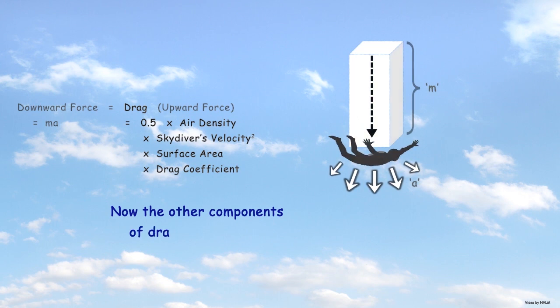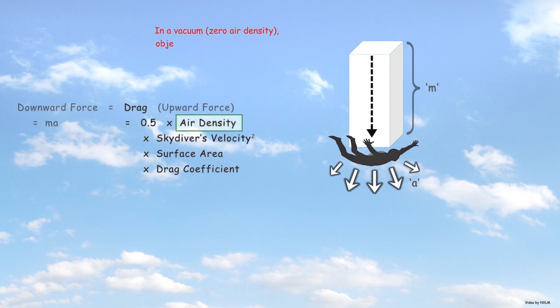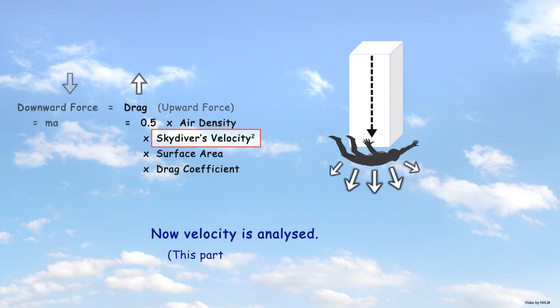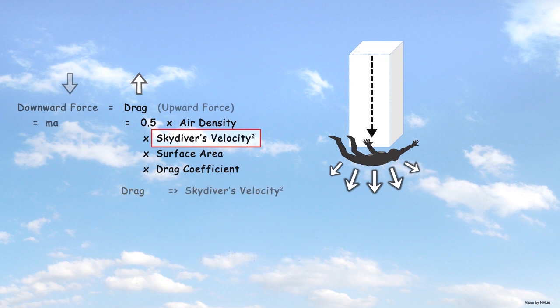Now the other components of drag are analyzed. In a vacuum, objects of different mass will fall at the same speed as there's no air to resist an object's descent. According to the equation for drag, drag is proportional to the square of the skydiver's velocity.